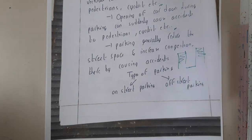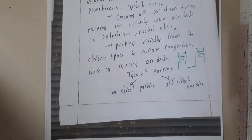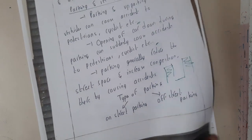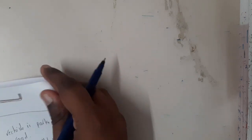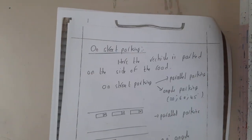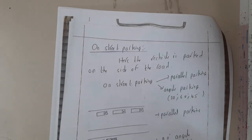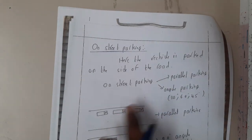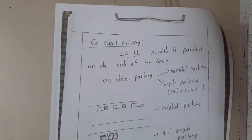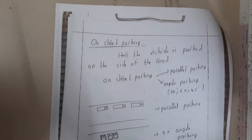There are two different types of parking. The first type is on-street parking and the second type is off-street parking. On-street parking, as the name suggests, means you park your vehicle on the street — vehicles are parked on the side of the road. On-street parking includes two subtypes: parallel parking and angular parking.